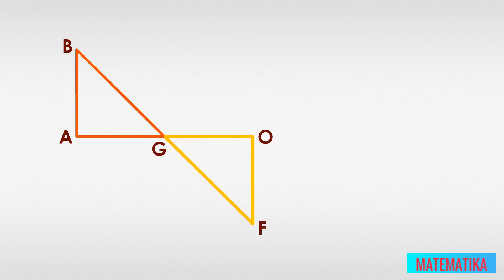Right triangle FOG shares a vertex, point G, with triangle BAG. We see that angle O and angle A are right angles, and the little hash marks tell us hypotenuses FG and BG are congruent. This is all we know.